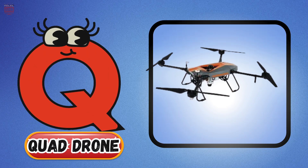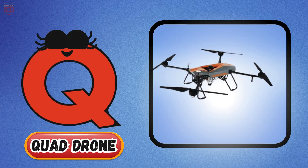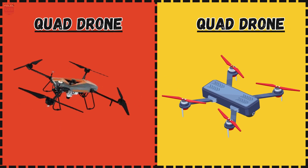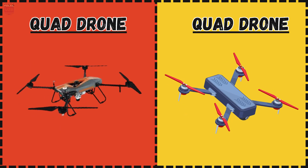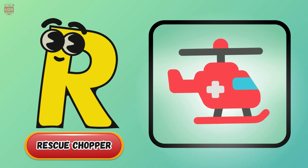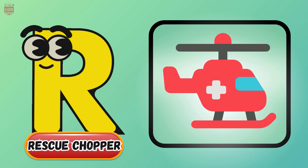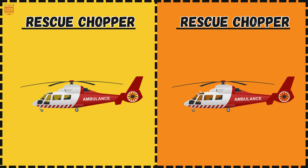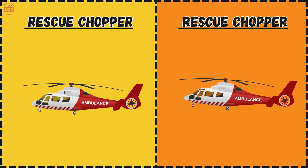Q is for quad drone, four propellers spinning round. R is for rescue chopper, helping when no help is found.